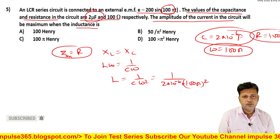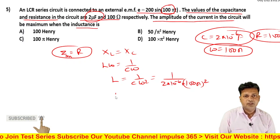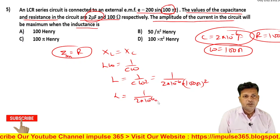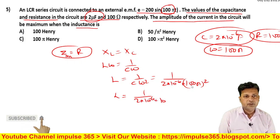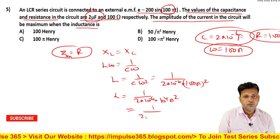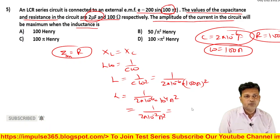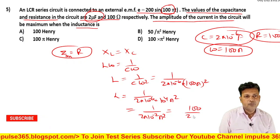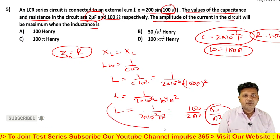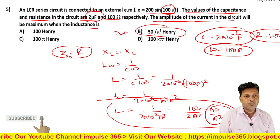So L equals 1 over 2×10⁻⁶ times 10⁴π², which equals 1 over 2×10⁻²π², or 100 over 2π², which simplifies to 50/π² Henry. So the answer is 50/π² Henry, which matches option B.